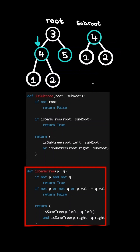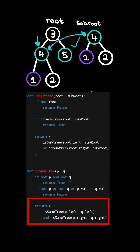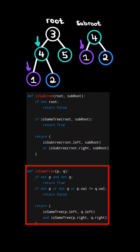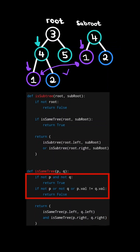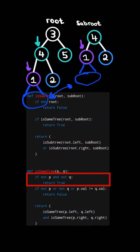Consider the recursive call on the root's left subtree. The value at the root node and subroot node are equal, so we check the rest of the tree. We do a recursive call on root's left subtree with subroot's left subtree, and a recursive call with root's right subtree and subroot's right subtree. The values at the nodes are equal, and both recursive calls on the left and right trees will return true.